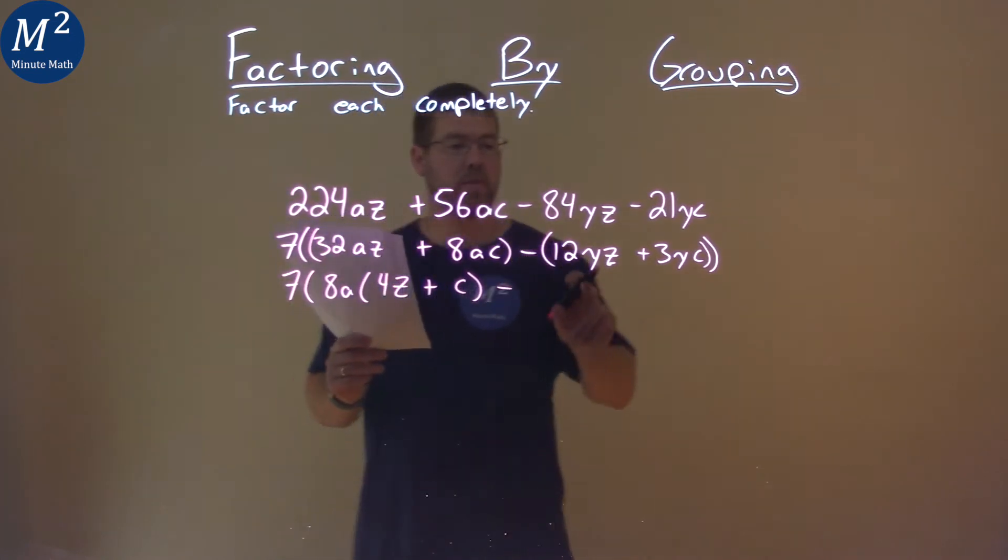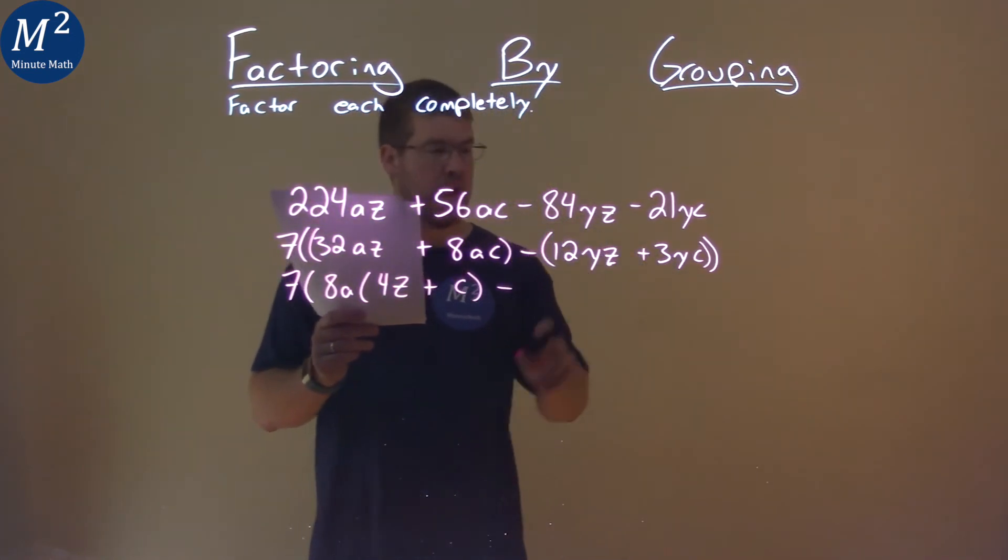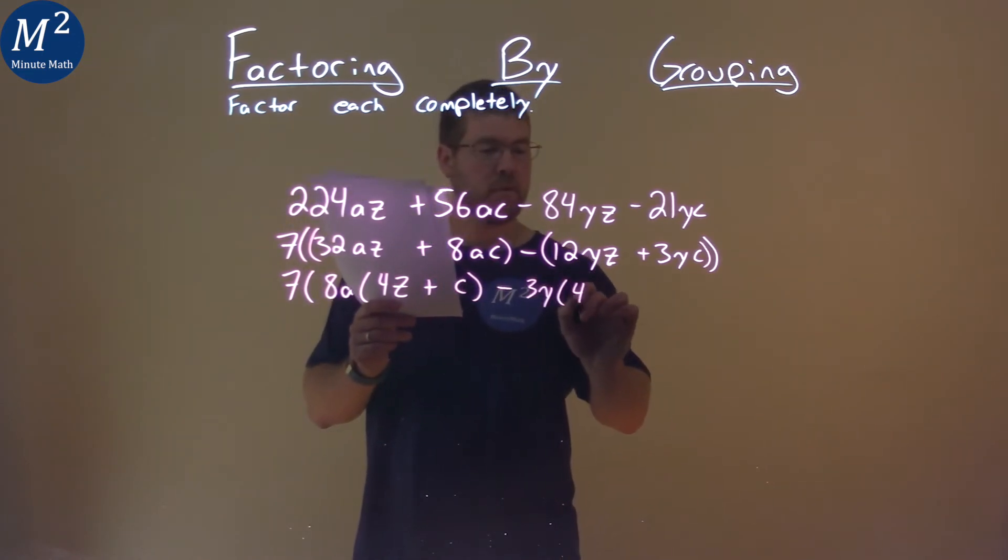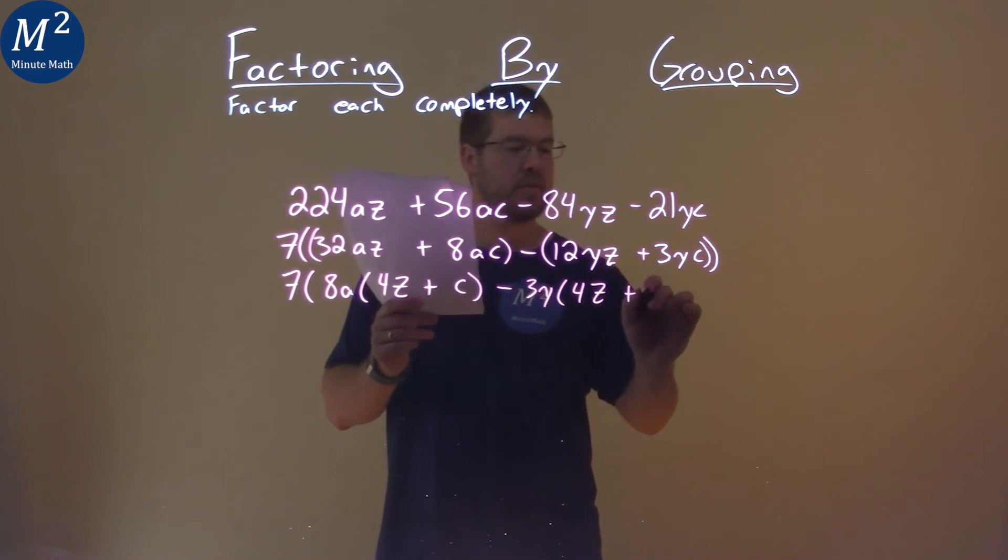Minus, now do the same thing with the second parentheses here. A 3Y goes in both parts. So if I pull out a 3Y, I'm left with here a 4Z plus C.